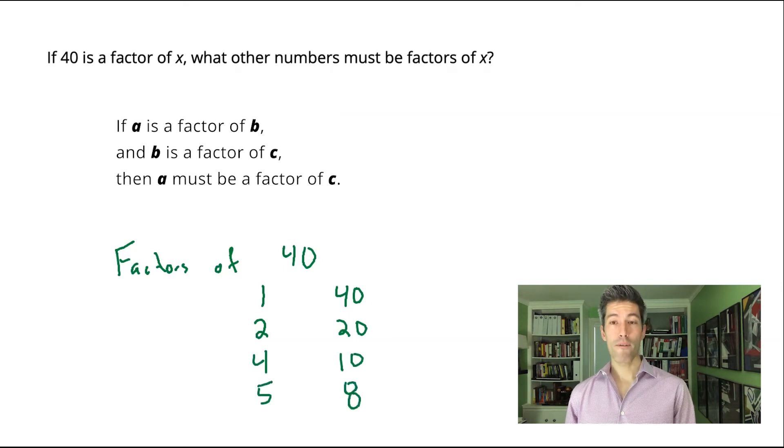If we keep going, 40 does not divide by 6 evenly, nor does it divide by 7 evenly. So 6 and 7 are not factors. But after 7, we get back to 8, and now we're on our way back up the list.